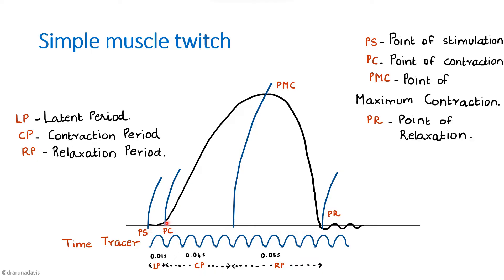The graph has a latent period, then a steep contraction phase, and then a relaxation phase. The contraction phase is steeper than the relaxation phase because the lever has inertia — it takes time to come down, so the relaxation phase is longer and less steep. After the relaxation phase there are what are known as after-curves or shatter waves, due to the momentum of the lever. So: latent phase, contraction phase, relaxation phase, and after-curves or shatter waves.